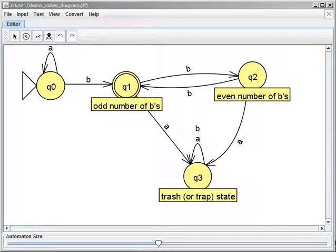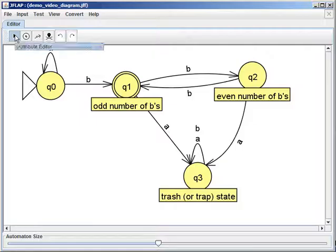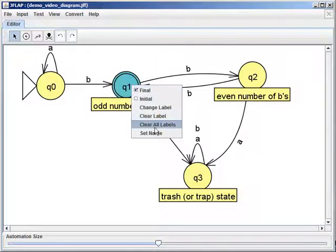So I want to show you how things change when we move from DFAs to NFAs. Here's our JFLAP DFA, and I'm going to start by just deleting all of these labels. I'm going to right-click on one of these states and say clear all labels. I just don't want to see the labels while we're tracing stuff.